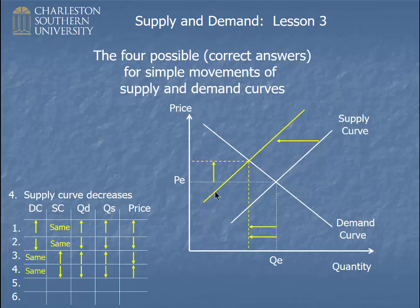Those are the four movements from one equilibrium to another. Notice that in each case, either the demand curve moved or the supply curve moved — they never both move in these simple movements. Also notice that since we were in equilibrium at the original point and now we're just establishing a new equilibrium somewhere else, the quantity demanded and the quantity supplied must do the same thing, because they are equal at equilibrium. So if the equilibrium point moves, they must have both moved the same way.